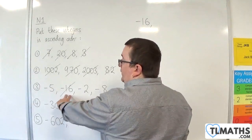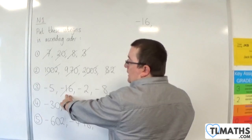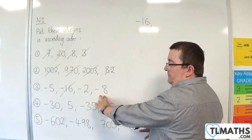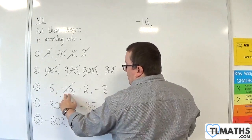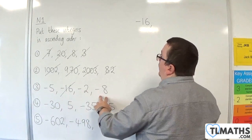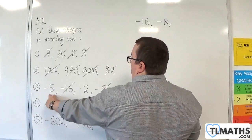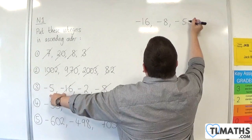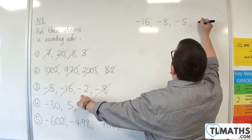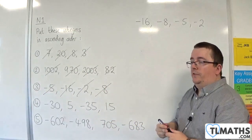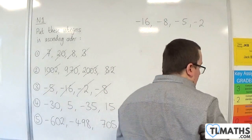Minus 16 degrees Celsius is colder than minus 8 degrees Celsius, for example. So minus 16 will be first, then minus 8, then minus 5, then minus 2. That's the third set of integers put into ascending order.